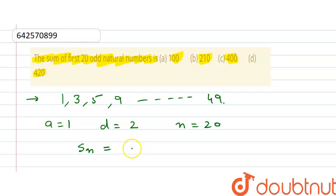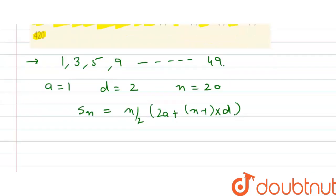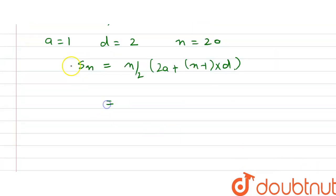The sum equals n/2 times [2a + (n-1)d]. This is the formula for the sum of an arithmetic progression. Let's substitute the values. We get n = 20 divided by 2...